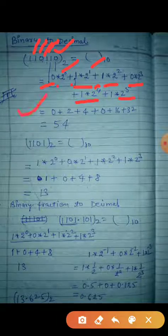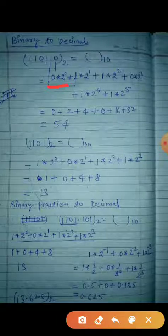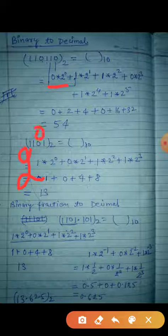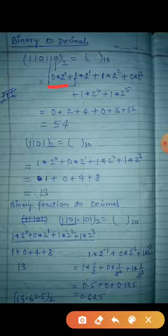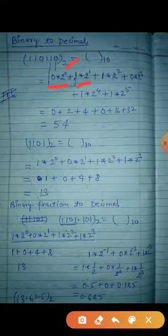Now calculate it. The first term: 0 into 2 to the power 0. Keep in mind — any digit to the power 0, its value will be 1. So 2 to the power 0 means 1. So 1 into 0 equals 0. Plus, 2 to the power 1 means 2. So 2 into 1 equals 2.